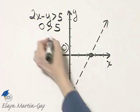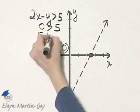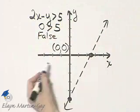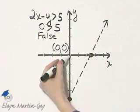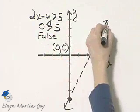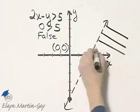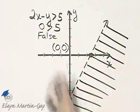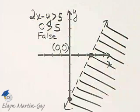0 is greater than 5, that is a false inequality, which means I do not shade the side of the boundary line where the test point lies. I shade the other side of the boundary line. And I am shading then all ordered pairs that will make this a true inequality.